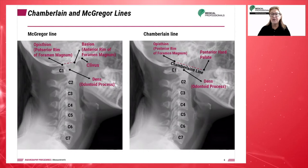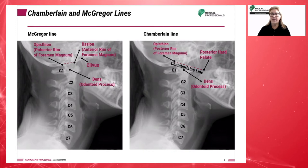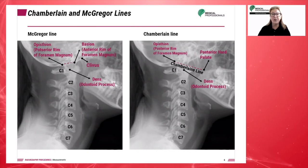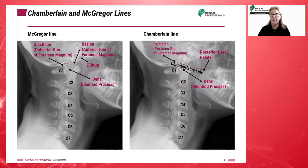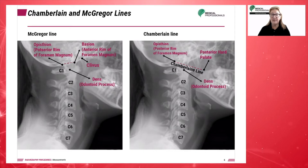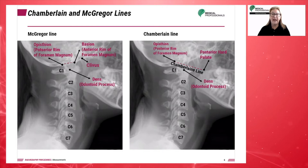When the posterior aspect of the foramen magnum cannot be identified, it is recommended to use the McGregor line. The McGregor line connects the posterior edge of the hard palate to the most caudal point of the occipital curve. If the tip of the dens lies more than 4.5 millimeters above this line, this indicates the presence of basilar invagination.